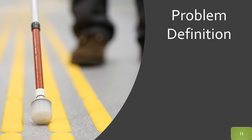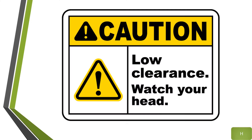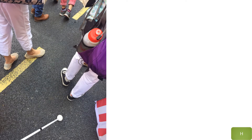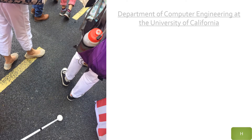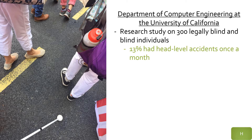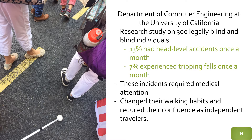The problem our team is trying to solve is associated with limitations of the conventional white cane used by the visually impaired and blind to navigate. This white cane does not have above-ground object detection, posing head injury risks such as bumping into branches, signs, and other hanging objects. It also creates tripping hazards. Studies show that 13% of white cane users experience head-level accidents once a month, and 7% experience tripping falls once a month, requiring medical attention and reducing their confidence as independent travelers.